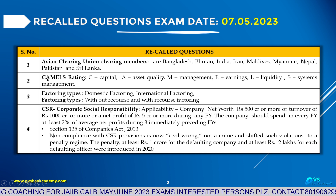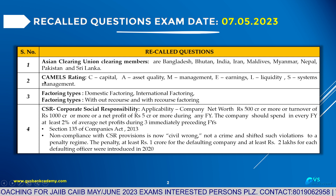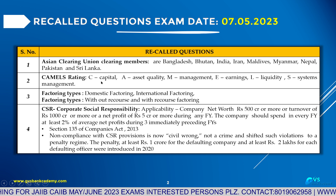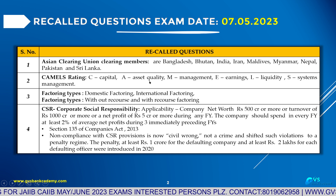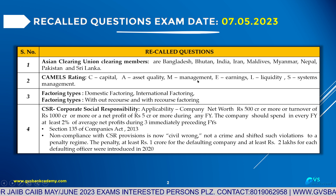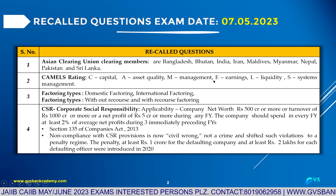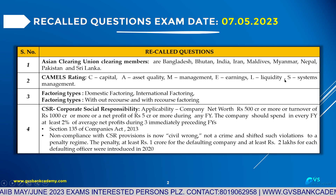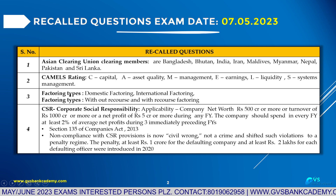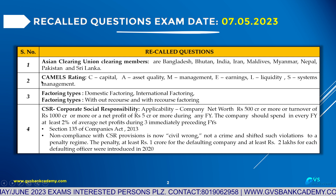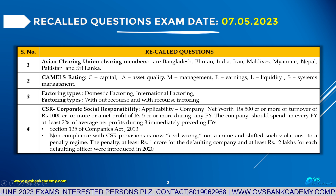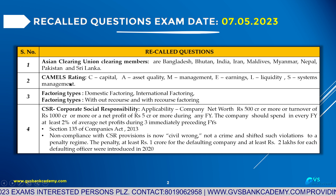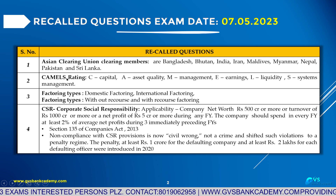Second question: CAMELS rating. C stands for Capital. A for Asset Quality. M for Management. E for Earnings. L for Liquidity. S for Systems and Management. Based on this CAMELS rating, RBI rates the banks.